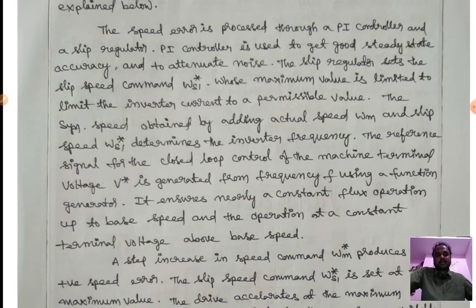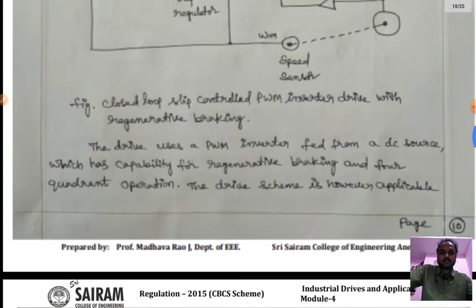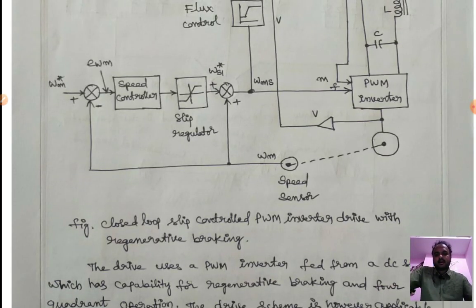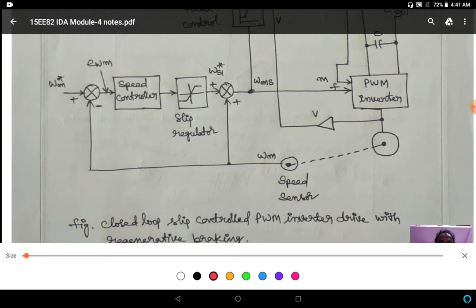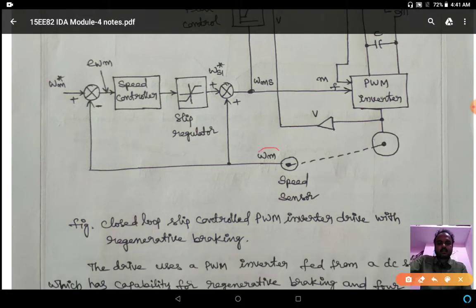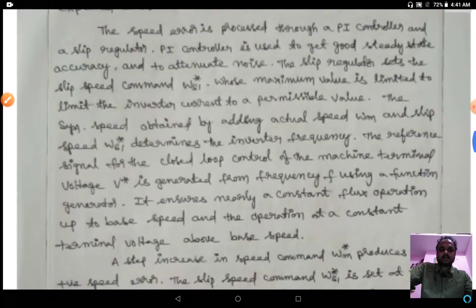The synchronous speed is obtained by adding the actual motor speed WM to the slip speed WS1. We take the reference speed and by adding these two values — WM and WS1 — we obtain the synchronous speed.